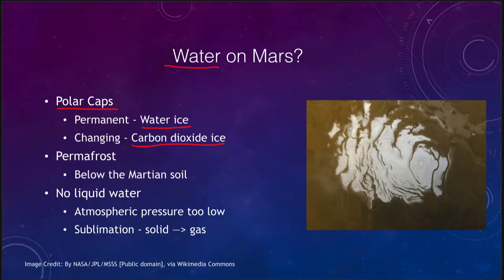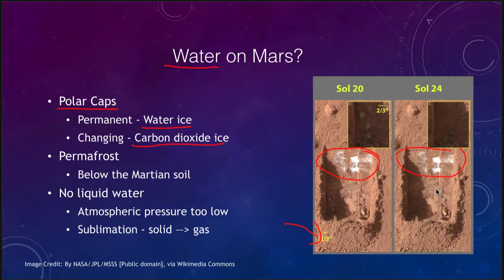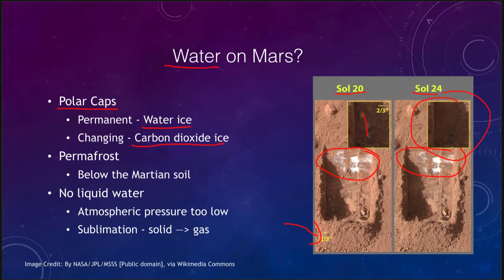We do see some permafrost below the Martian soil. Using rovers we were able to dig into the soil. You can see the reddish Martian soil and some signs of materials related to water that did not last very long. You can see the whiter areas present, and just from Martian day 20 to day 24 they were gone. So we do know that there is some water in the permafrost below and in the polar caps at the poles of Mars.